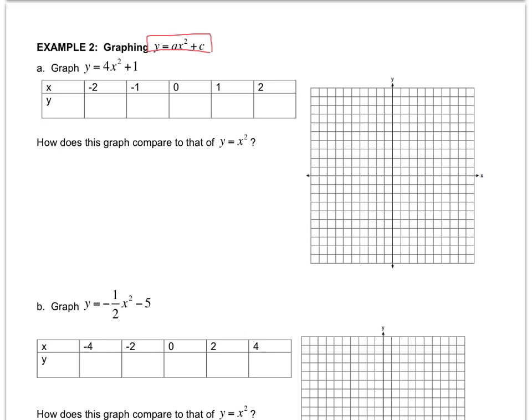So let's do letter a together. Negative 2 squared is 4. 4 times 4 is 16. Plus 1 is 17. Negative 1 squared is 1. 4 times 1 is 4. Plus 1 is 5. That gives me 4 times 0, which is 0 plus 1. 1 squared is 1. 1 times 4 is 4. Plus 1 is 5. And then this should be 17. And I'm just going to shortcut because I know that I start to see the symmetry.